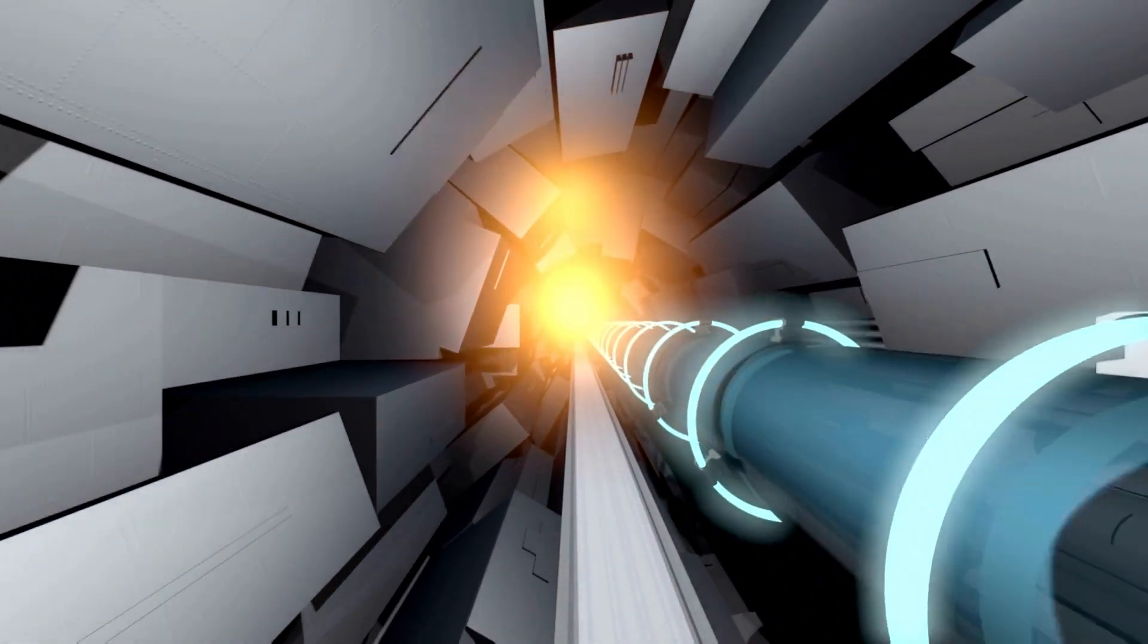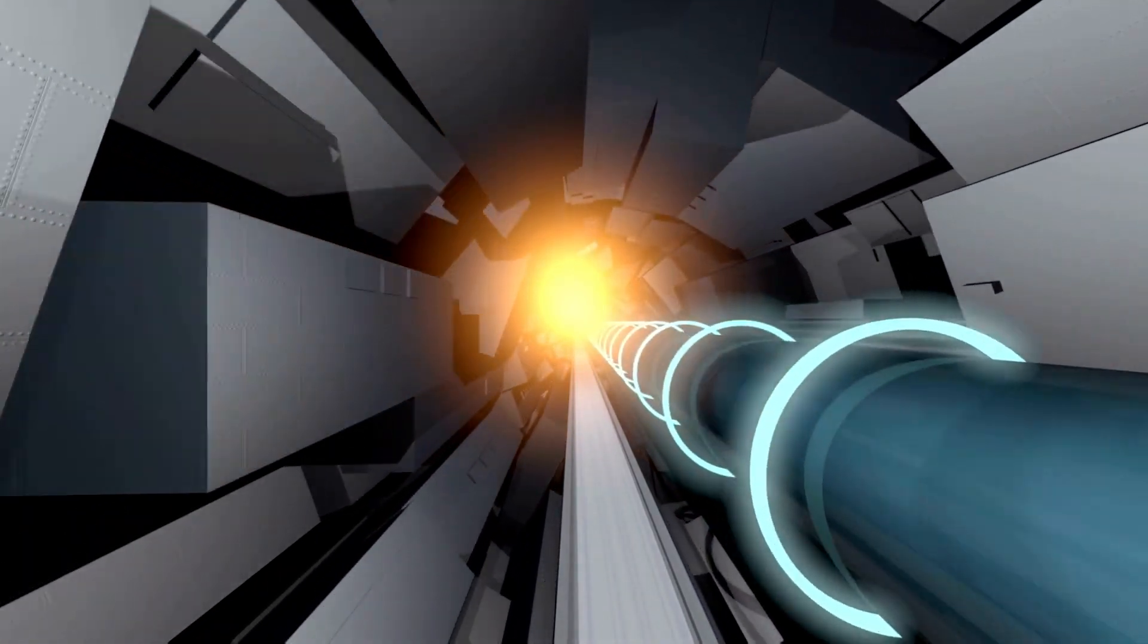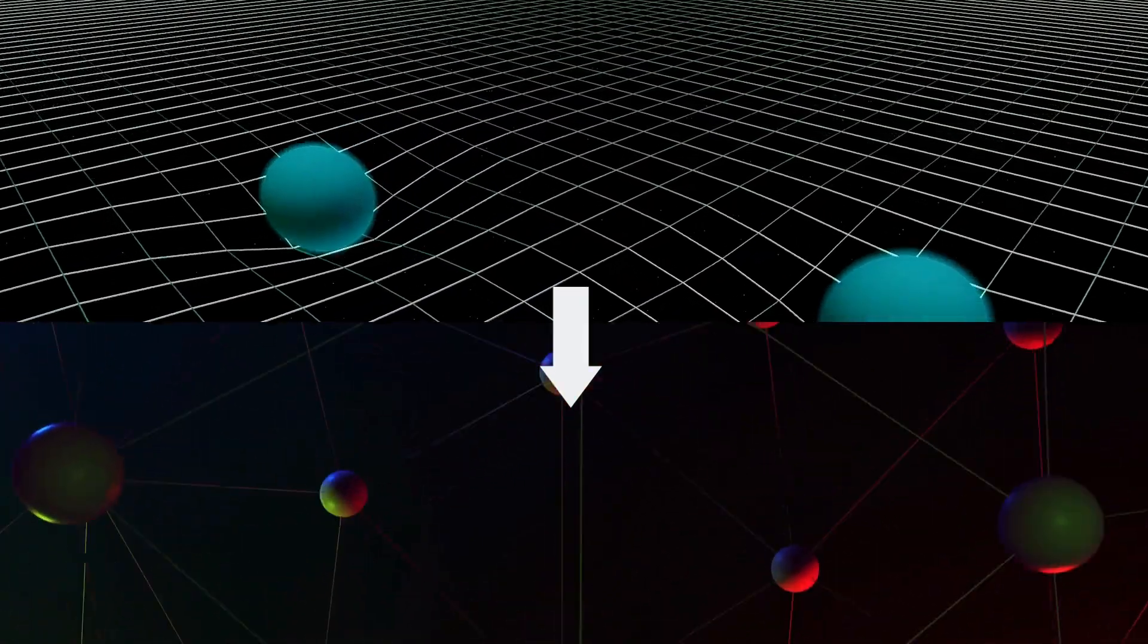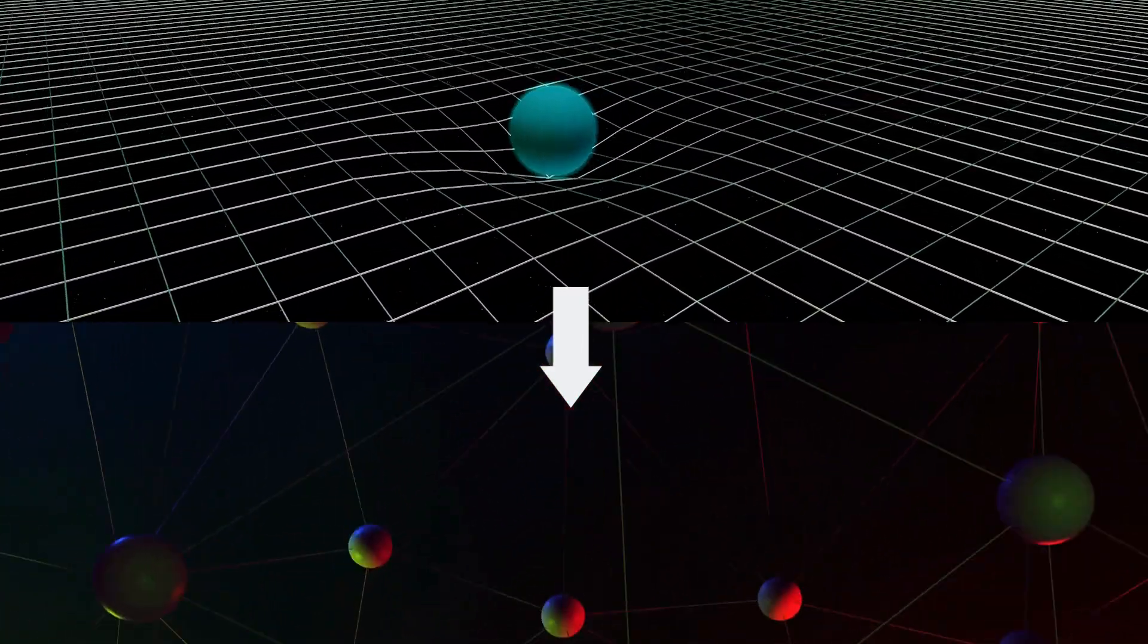The most important feature of loop quantum gravity is that it is a testable theory. And if spacetime atoms are out there, that means we can discover them in future experiments.